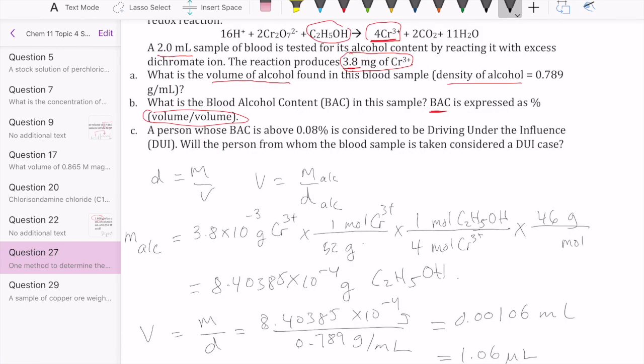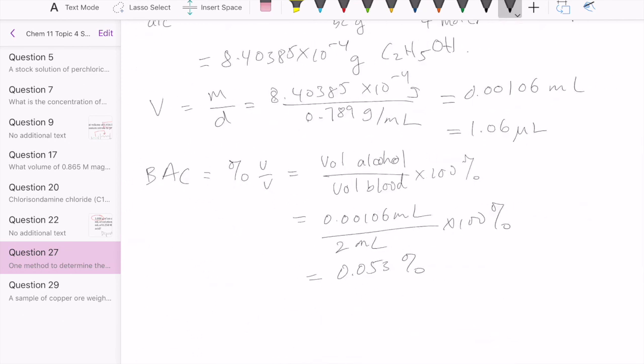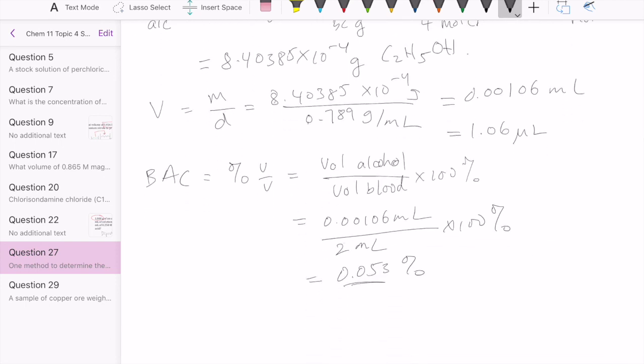Now in certain states, particularly California for example, you're considered driving under the influence if your blood alcohol content is above 0.08%. So given that this person has a blood alcohol level of 0.053%, this is not considered a DUI, because that is lower than 0.08%.